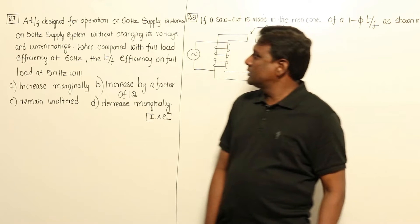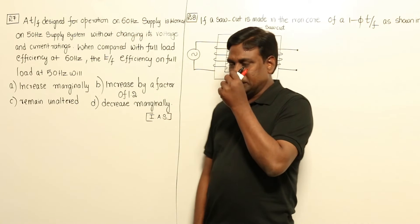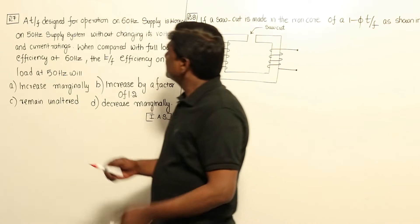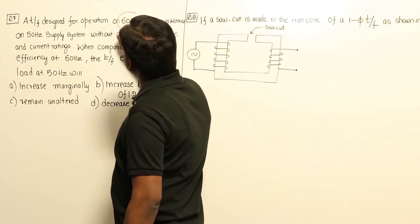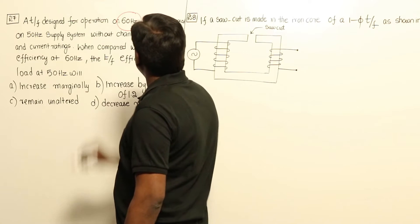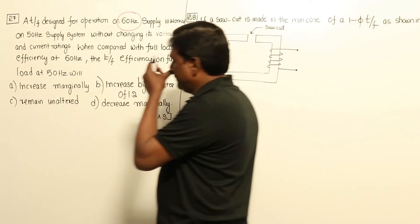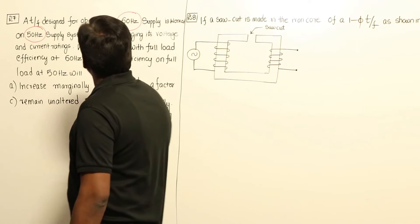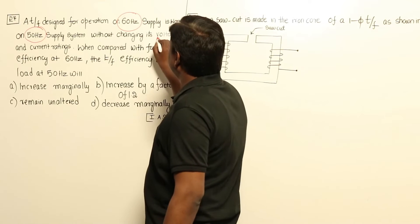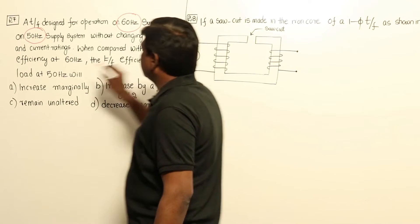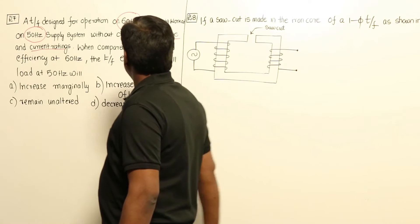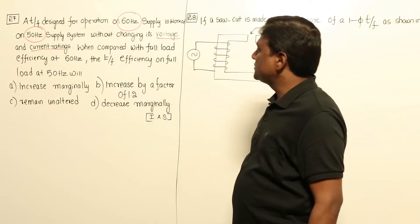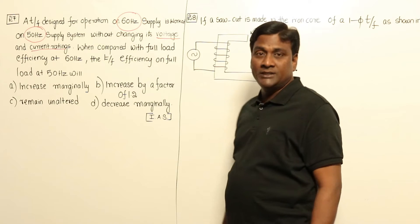Let us see two more World IIS civil services questions. In this question, a transformer is designed for operation on 60-hertz supply. It is worked on 50-hertz supply system without changing its voltage and current ratings. When compared with full load efficiency at 60-hertz, the transformer efficiency on full load at 50-hertz will be?